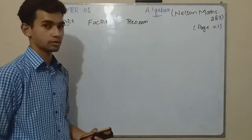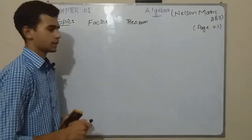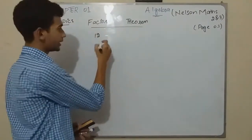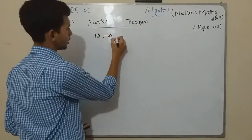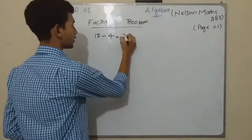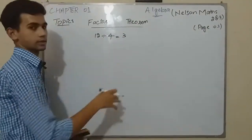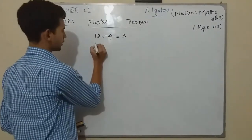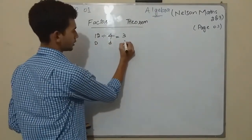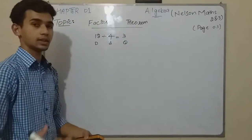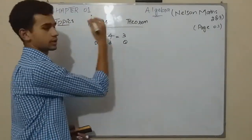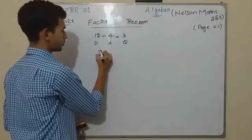Let me have a short preview. 12 is the dividend, 4 is the divisor, and the answer is 3 which is the quotient. This is dividend, this is divisor, and this is quotient.